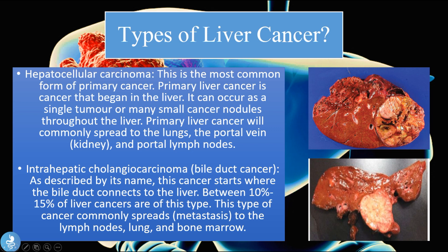Another form of malignant disease is the intrahepatic cholangiocarcinoma, which is bile duct cancer that can occur in the liver because the bile duct system infiltrates the liver quite largely. As described by its name, this cancer starts where the bile duct connects to the liver, and between 10 to 15 percent of liver cancers are of this type. It commonly spreads to the lymph nodes, the lung, and the bone marrow.